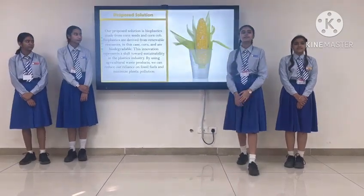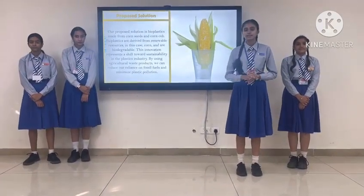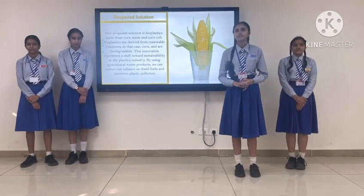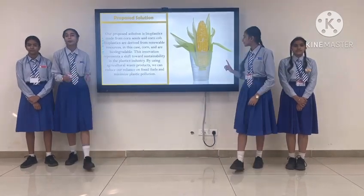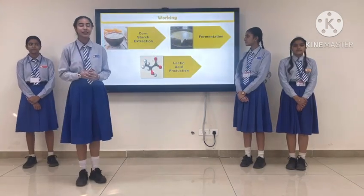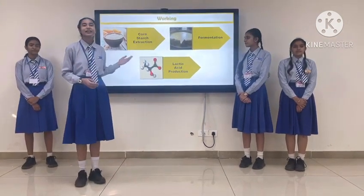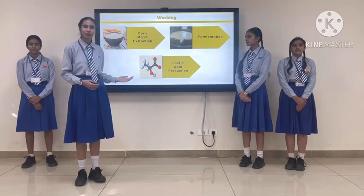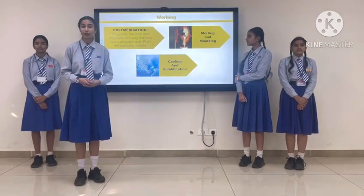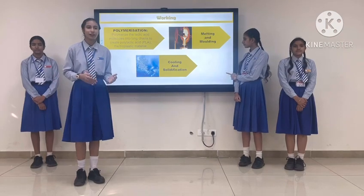From Maze Matrix, we aim to create bioplastics from maize seeds. This will help bring down our dependence on harmful plastics. Bioplastics can be made in 6 steps. Firstly, corn starch is extracted. Then it is fermented. Then lactic acid is produced. Polymerization further leads to the formation of bioplastics. It can then be molded and solidified.